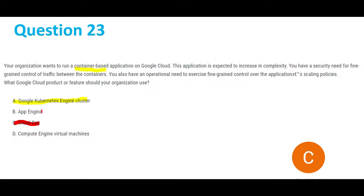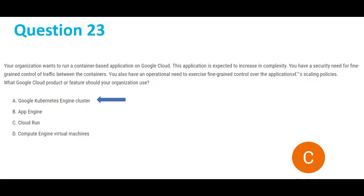App Engine is for monolithic, single-layered applications, but the question requires container-based applications which are not monolithic, so App Engine is not the answer. Option D, Compute Engine virtual machines, is for creating virtual machines, so that's clearly not the answer either. B, C, and D are crossed off, so option A, Google Kubernetes Engine cluster, is the answer for question 23.